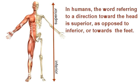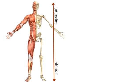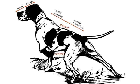In humans, the word referring to a direction toward the head is superior, as opposed to inferior or towards the feet, whereas the words anterior and posterior refer to the front part of the body and the back part of the body respectively. A dog's front is where his head is and his back is where his tail is.